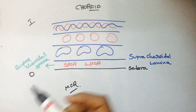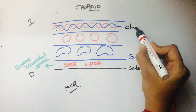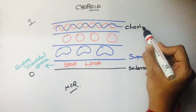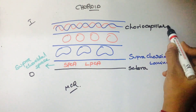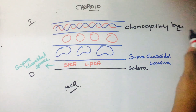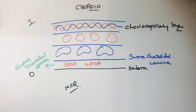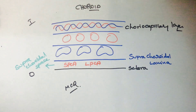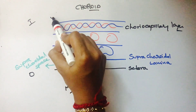Beneath the layer of medium vessels we have a layer of choriocapillaries. These are the layers of the choroid, and beneath the choroid we have the retinal pigment epithelium.